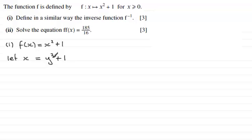And what we now do is make y the subject. So I'm going to subtract 1 from both sides, so therefore y squared would be equal to x minus 1. And then we take the root to both sides, so that's going to give me therefore y equals the square root of x minus 1.